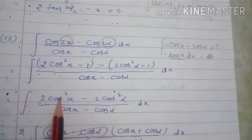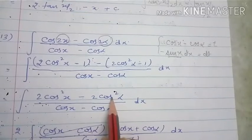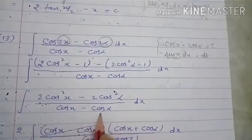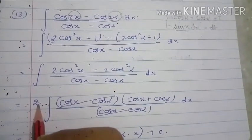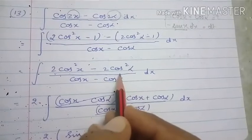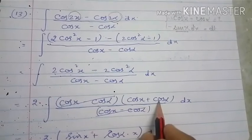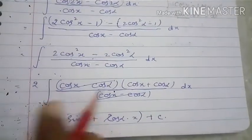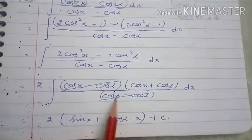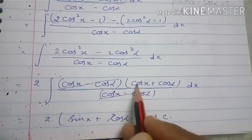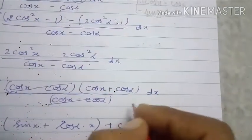After cancellation, the numerator becomes 2cos²x - 2cos²α, with the denominator remaining cosx - cosα. Taking 2 as common and applying the a² - b² = (a-b)(a+b) property, the (cosx - cosα) term cancels with the denominator. We are left with 2(cosx + cosα) to integrate.